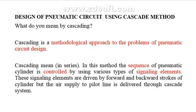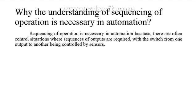So we are identifying the sequence of operations of the cylinder, whether it may be a forward or retraction stroke. Why is understanding the sequence of operation necessary in automation? Sequencing of operation is necessary in automation because there are often controlled situations where a sequence of outputs is required when switching from one output to another, controlled by the sensor. In many industries having automation nowadays, we must know the sequence of operation.